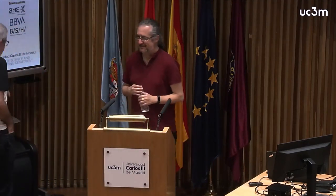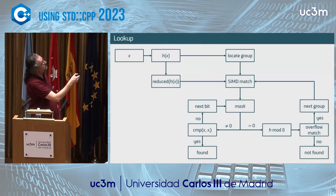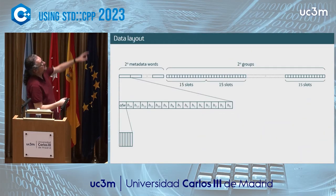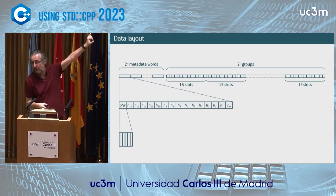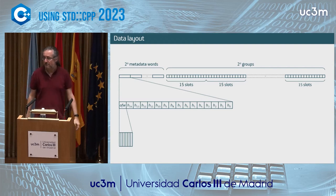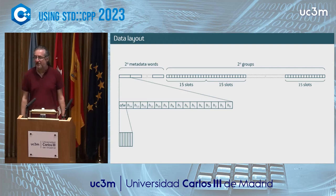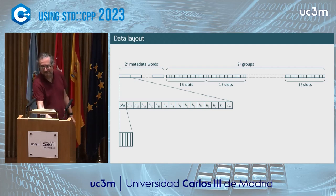Question: The overflow mechanism requires reading — are the relevant bytes always on the same cache line? Answer: Yes, the overflow byte is written as one byte and sits beside the other reduced hash values in the same 16-byte word, which fits in a cache line. So reading it is essentially free.